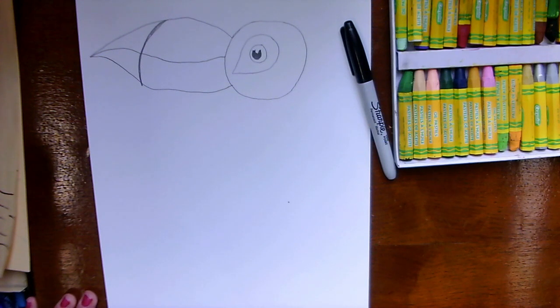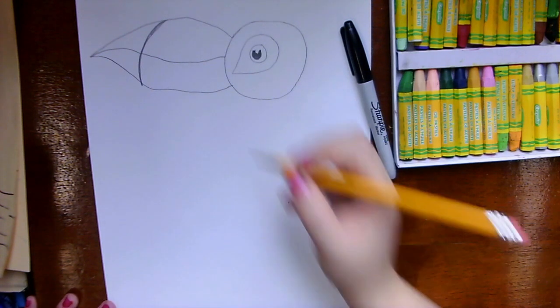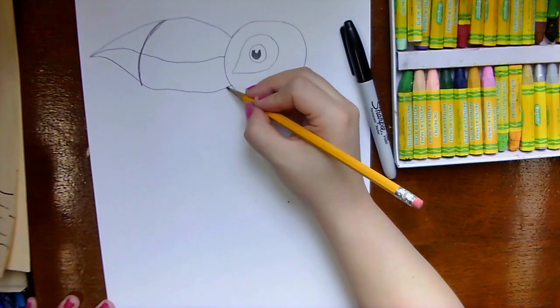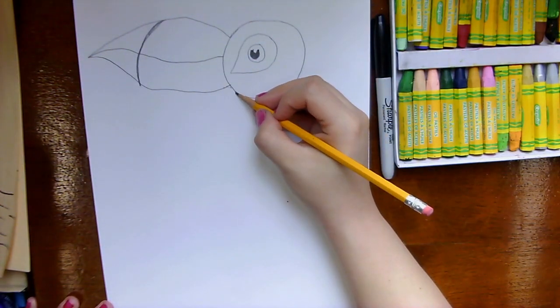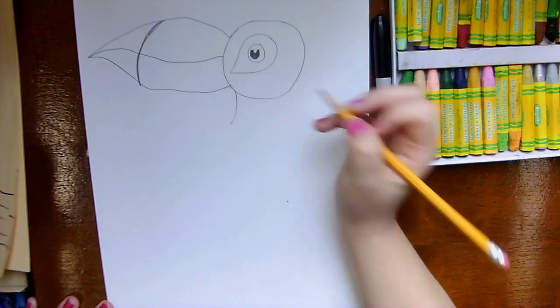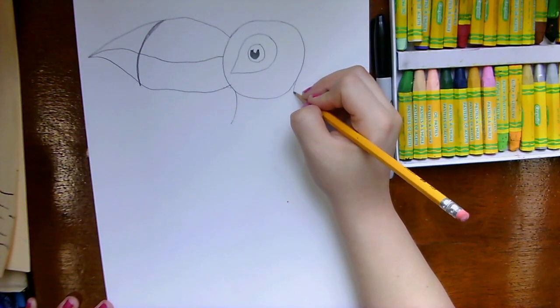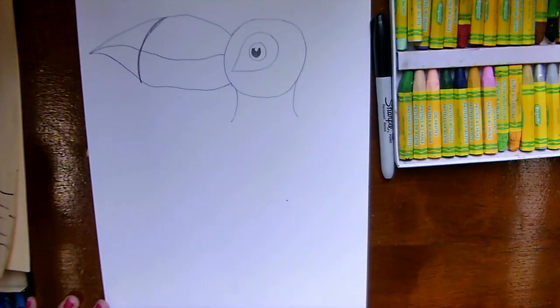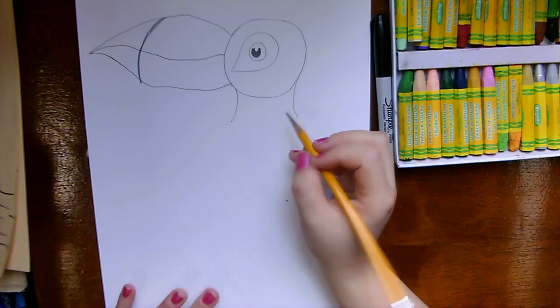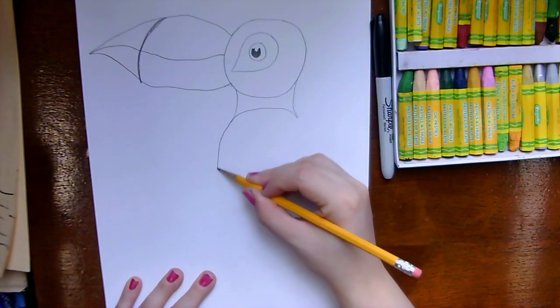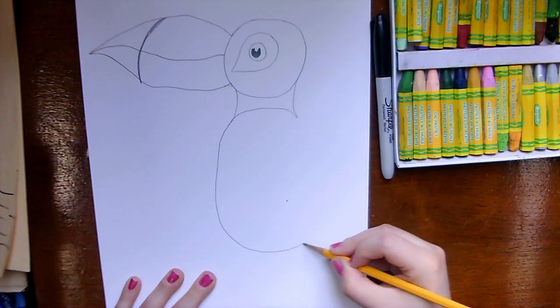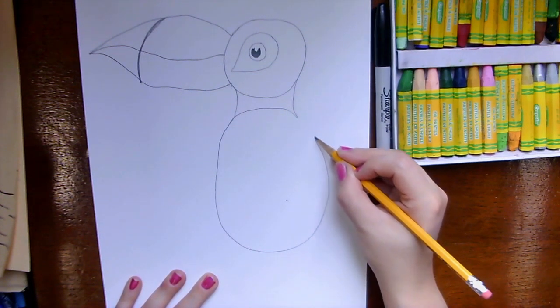The next thing I'm going to do is draw his neck and that's going to come out from underneath his head on this side and this side. So to do that I'm going to go a slight curve down, slight curve down, and now I'm going to connect it with his body shape which is going to be a longer oval. So I'm going to come up, around, and up again.